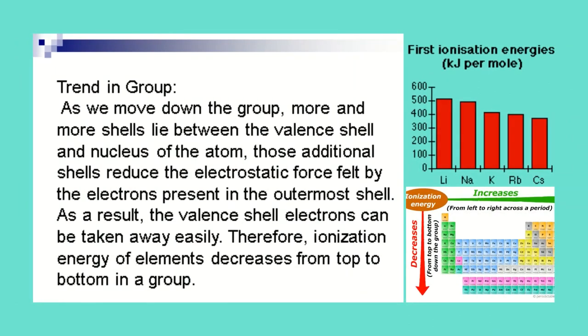As we move down the group, more and more shells lie between the valence shell and nucleus of the atom. Those additional shells reduce the electrostatic force felt by the electrons present in the outermost shell. As a result, the valence shell electrons can be taken away easily. Therefore, ionization energy of elements decreases from top to bottom in a group.